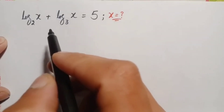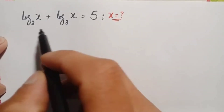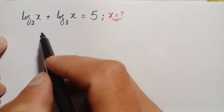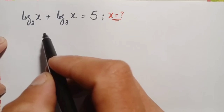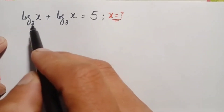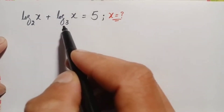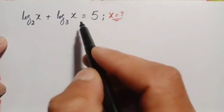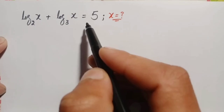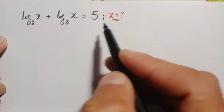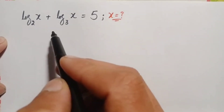Hello everyone, you are welcome. We will solve this beautiful logarithm problem with different bases: log of x with base 2 plus log of x with base 3 is equal to 5. We will find the value of x.